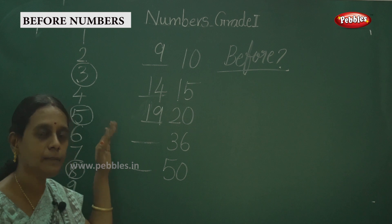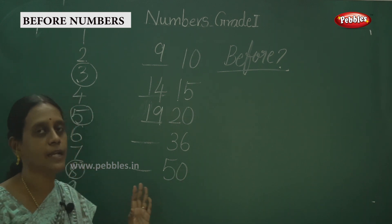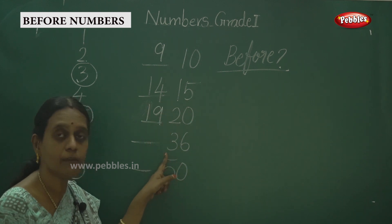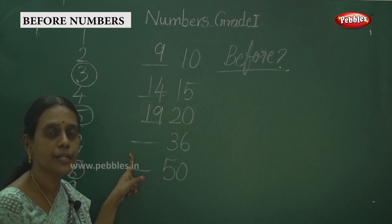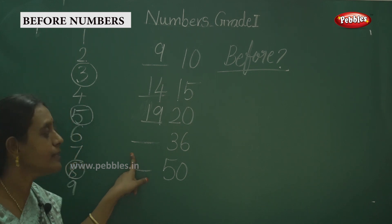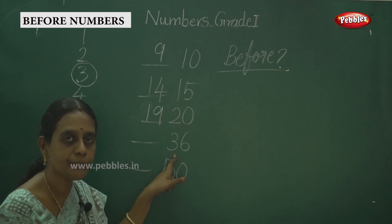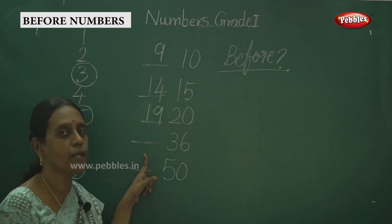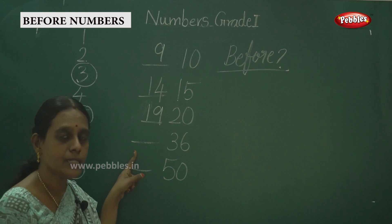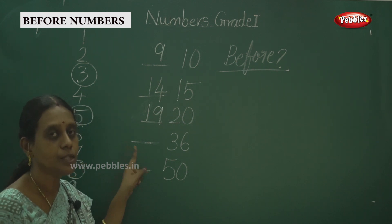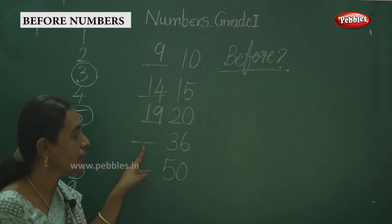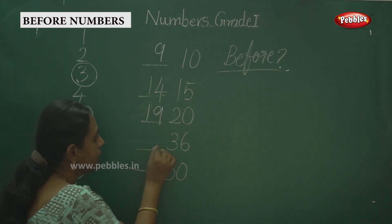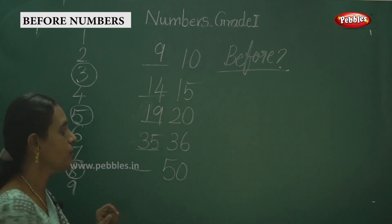This is the way to find the before number. With this method there will be no confusion, no mistakes. When we do 2-digit numbers, the method is: whatever number is given, count from that ten's group. For 36, start from 30: 30, 31, 32, 33, 34, 35, 36. So here you have to write 35. Your sum is correct.